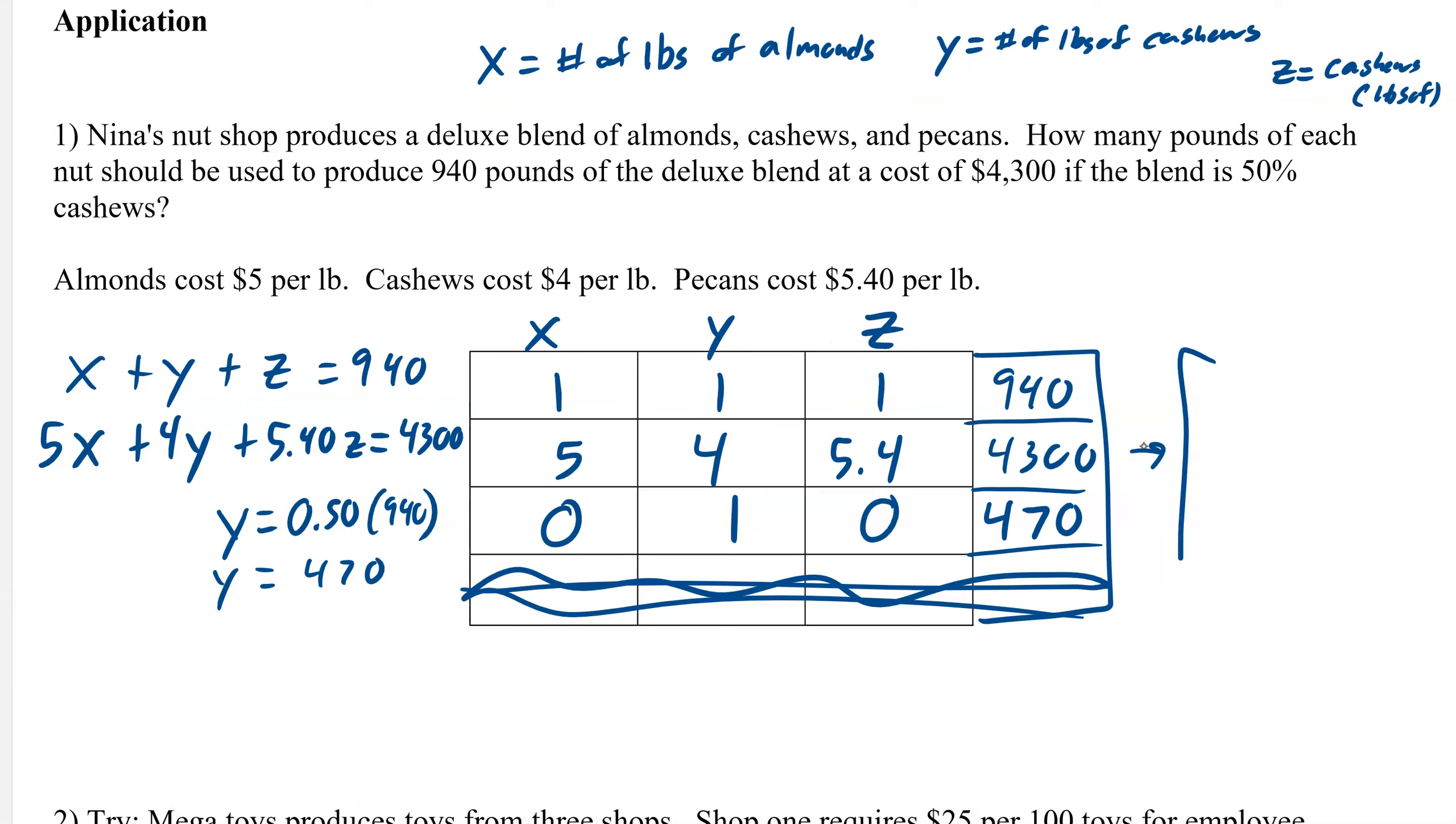So this matrix becomes 1, 0, 0, 0, 1, 0, 0, 0, 1. So we know that's our X, Y, and Z: 295, 470, and 175. Our X here is 295, our Y is 470, and our Z is 175.